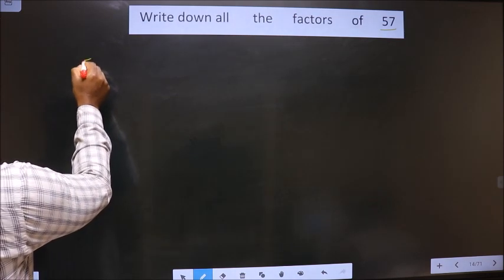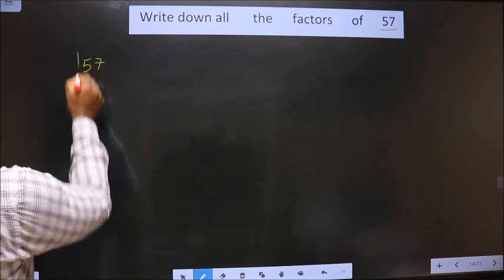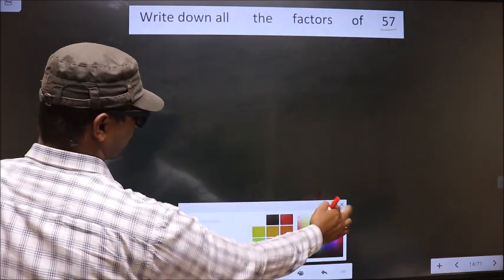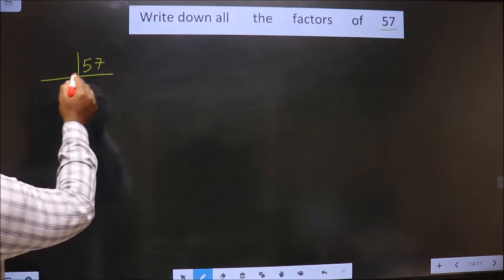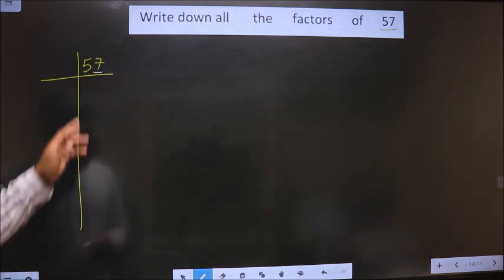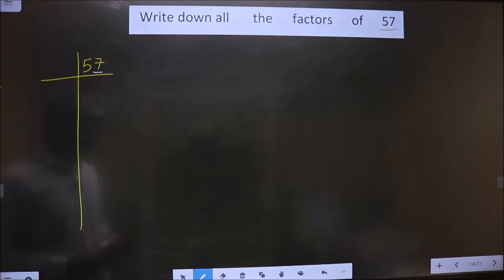See here, 57. Now, for this number, last digit is 7, which is not even. So this is not divisible by 2.